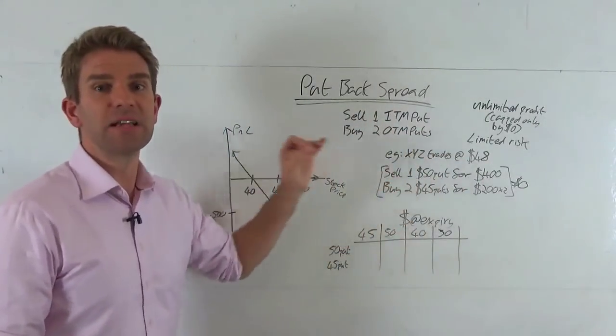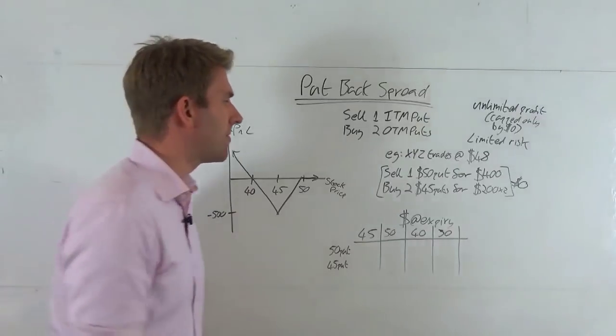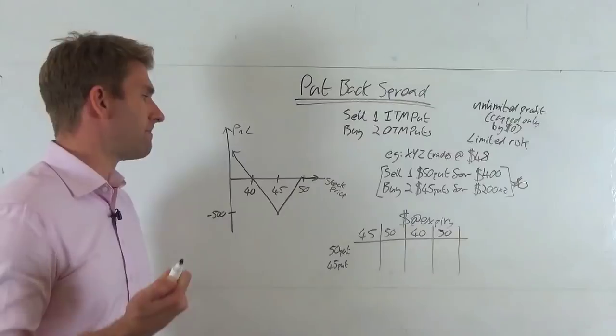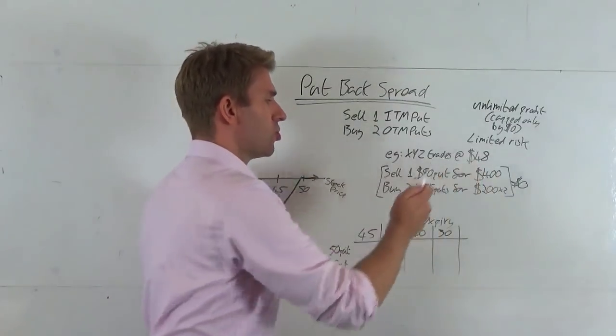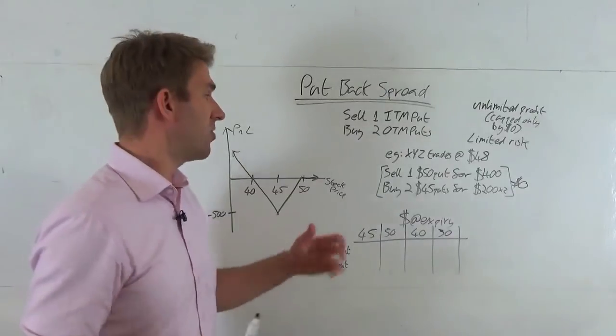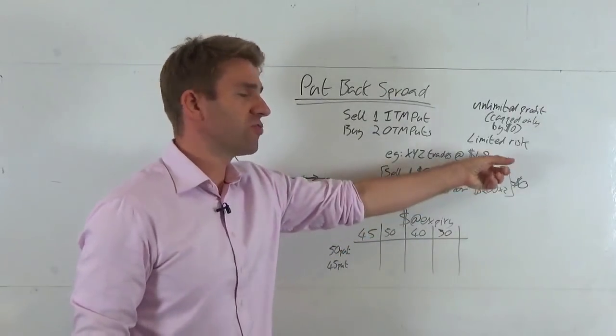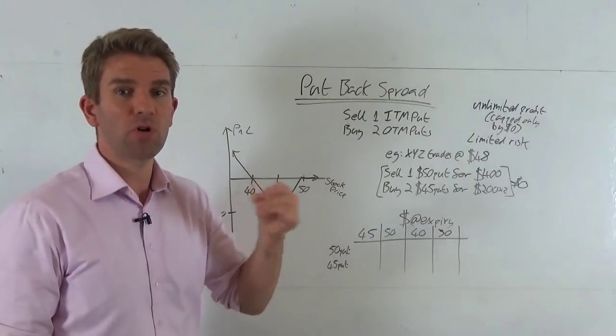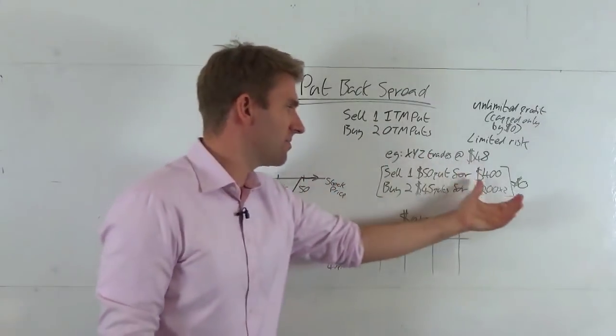At expiry we expect this to be significantly lower, so we want to position for that. What we do is we sell a $50 put for $400. That happens to be $2 in the money, right? Because it's got some intrinsic value - got the right to sell something at $50 that's currently trading $48 - $2 multiplied by 100 shares, because one contract has 100 shares, and then there's some premium on that as well. So that's $400.